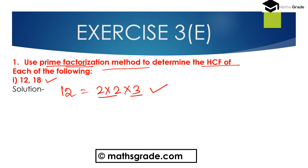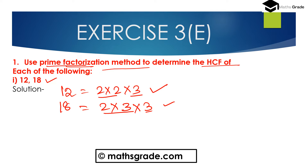Both 2 and 3 are prime numbers. Now the prime factorization of 18 is 2 multiplied by 3 multiplied by 3. 2 multiplied by 3 is 6, and 6 multiplied by 3 is 18. Both 2 and 3 are prime numbers. Now the prime factorizations of 12 and 18 are: 12 is 2 × 2 × 3, and 18 is 2 × 3 × 3. Now we have to find the highest common factor, HCF, of 12 and 18.